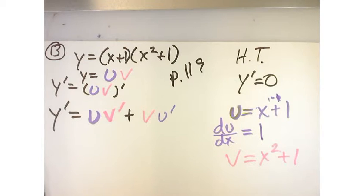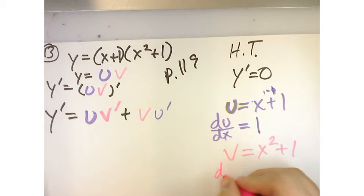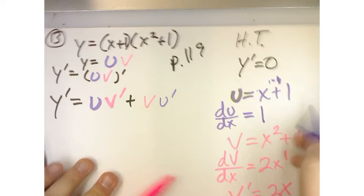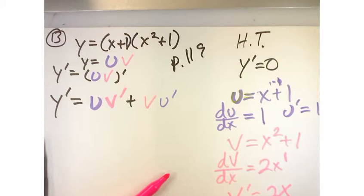Now when I take the derivative of v with respect to x, I toss the two to the front and subtract one from the power, so I get 2x to the first. What is the derivative of a constant? Zero. Zero. So really v prime is just 2x, and then u prime is just one.